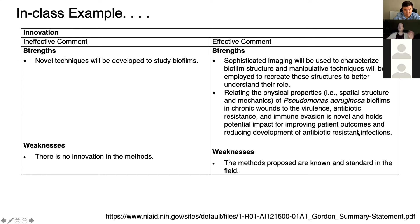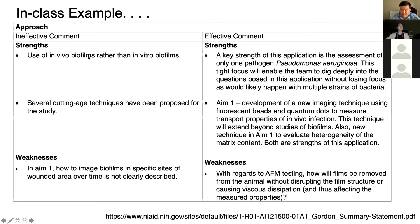Another effective innovation strength: 'Relating to physical properties, the pseudomonas aeruginosa biofilms in chronic wounds to virulence, antibiotic resistance, and immune evasion is novel and holds potential impact for improving patient outcomes and reducing development of antibiotic resistance.' That's much more specific information about innovation. For innovation weaknesses, an ineffective comment would be: 'There is no innovation in the methods.' Why? A better comment: 'The methods proposed are known and standard in the field.' Now I know I need to do a better job arguing for the uniqueness of my methods. For approach, an effective comment example: 'A key strength of this application is the assessment of only one pathogen. This focused approach will enable the team to dig deeply into the questions posed without losing focus, as would likely happen with multiple strains of bacteria.'